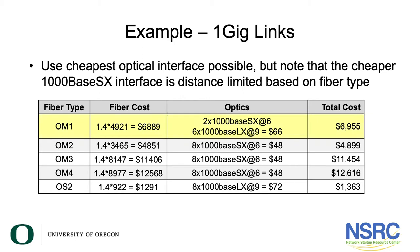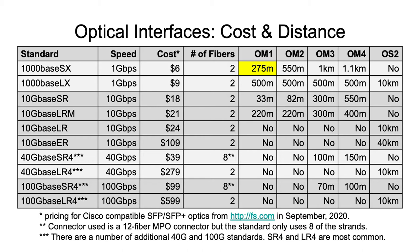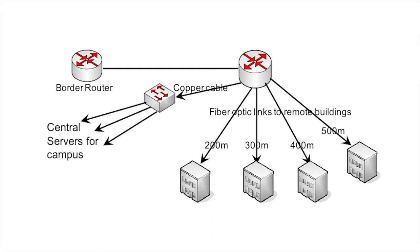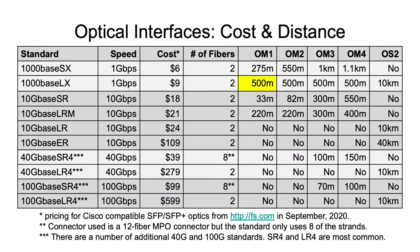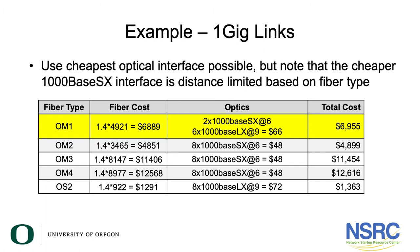If we build that network with OM1, it's 1.4 kilometers times the per-kilometer cost of $4,921, giving us $6,889. For the optics, gigabit over OM1 fiber supports up to 275 meters, so for the one 200-meter link we can use the cheaper $6 optical interface. The remaining links require the $9 interface — six of those. So two times $6 plus six times $9 gives a total optics cost, coming to $69.55.